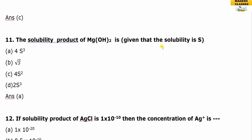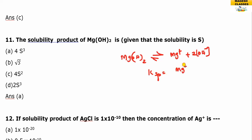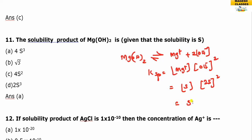For Mg(OH)₂, the ion dissociates to give Mg²⁺ and 2OH⁻. KSP equals the concentration of Mg²⁺ times the concentration of OH⁻ squared. If solubility is S, then Mg²⁺ = S and OH⁻ = 2S. So KSP = S × (2S)² = S × 4S² = 4S³. The answer is A.